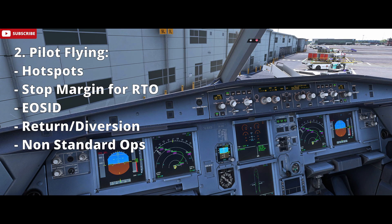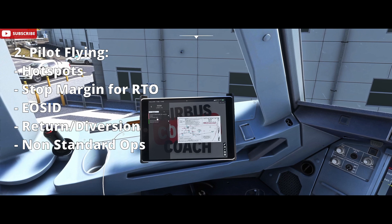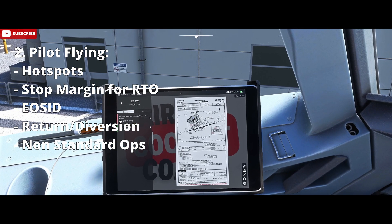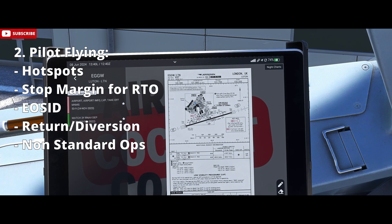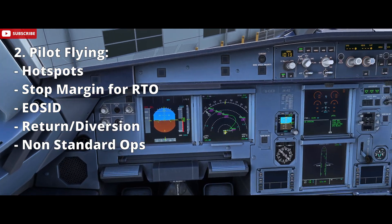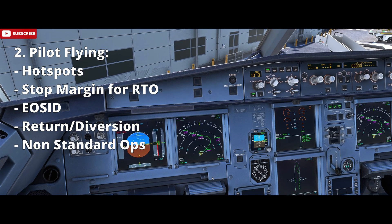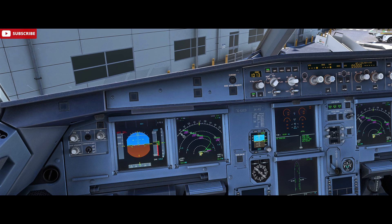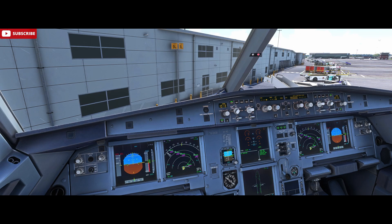We then move to part two, which is the pilot flying discussing hot spots for the taxi out, so we'd bring up the airport chart. We'll be looking at our predicted taxi route and any hot spots that may exist there. We'll also discuss the stop margin for the rejected takeoff, our engine out standard instrument departure routing, any return and diversion considerations — so we're looking at our return weights, the weather here if we had to return into this airfield or other airfield options for a diversion — and we'd also be discussing any non-standard operations, so there may be a defect with the aircraft for example.